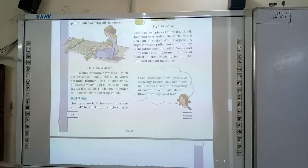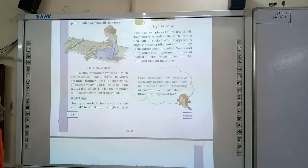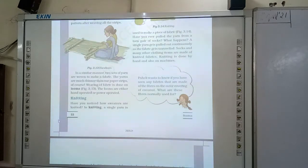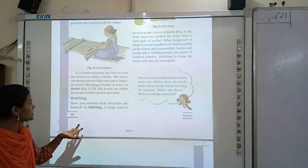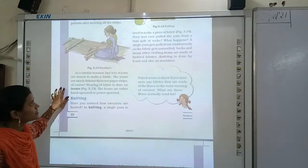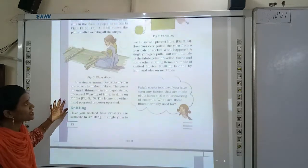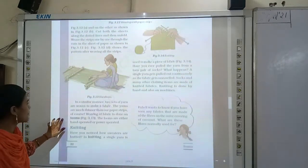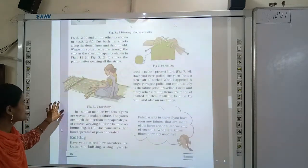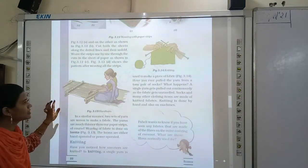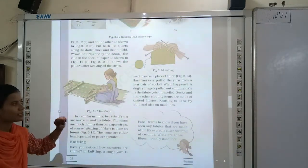Now, what is knitting? I have explained what is weaving. In weaving, we use two sets of yarn to make a fabric. But in knitting, a single yarn is used to make a piece of fabric. There is a difference between weaving and knitting.